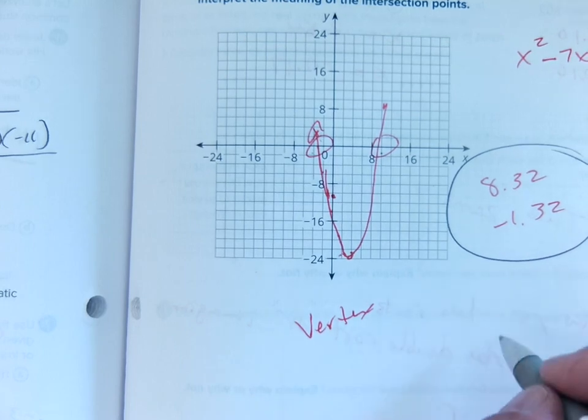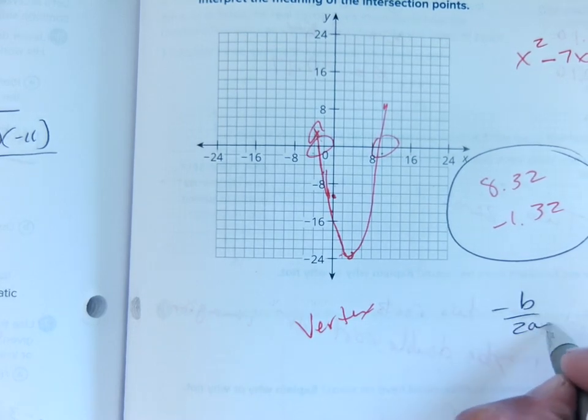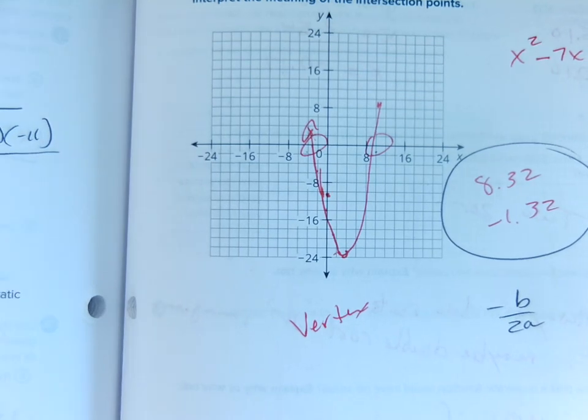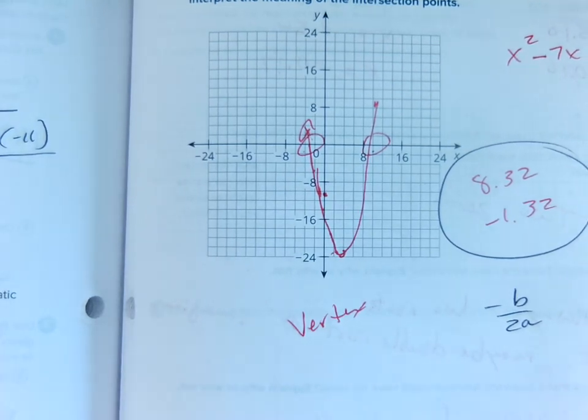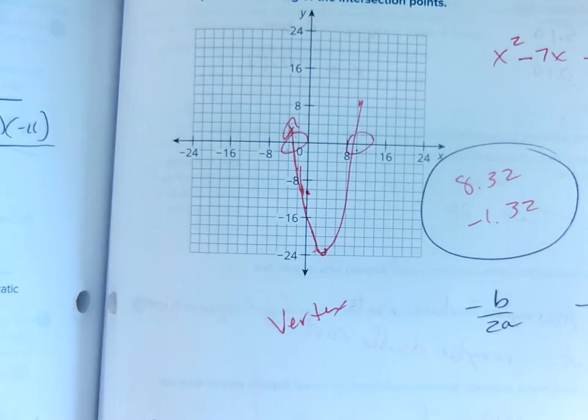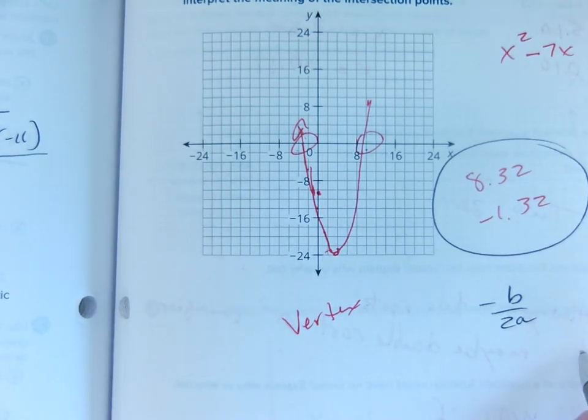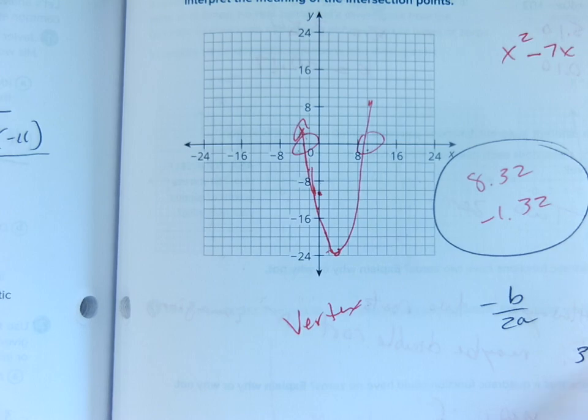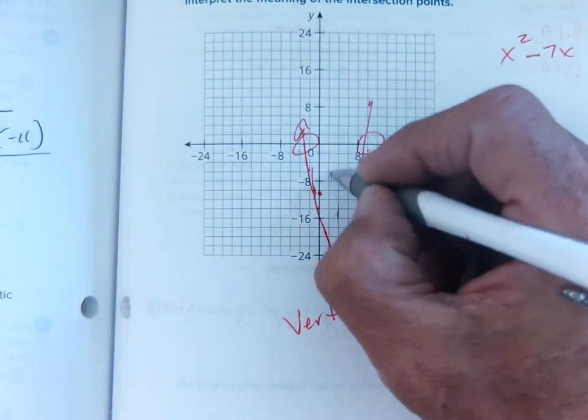Now if you want the vertex, easiest way to do this, negative b over 2a, which is part of the quadratic formula. That's at 7 over 2, that's part of the quadratic formula is negative b over 2a, which is about 3.5, and there you have it at about 3.5.